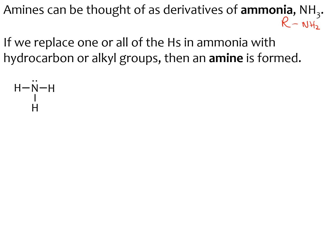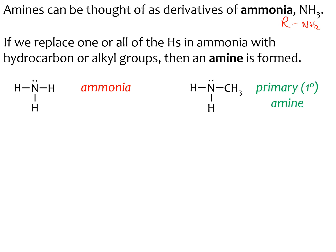Here we have ammonia, NH3, and you can see the lone pair on the nitrogen. If we replace one of the Hs with a CH3 group, then we would form something called a primary amine, shown here with one and the little circle at the top to mean primary. This is the same as carbocations and other things in chemistry, where if we have one replacement, we call it a primary substance. If we were to replace another H with a CH3 group — it could be any other R group — then this would be a secondary amine.